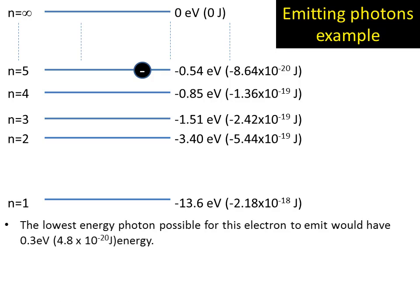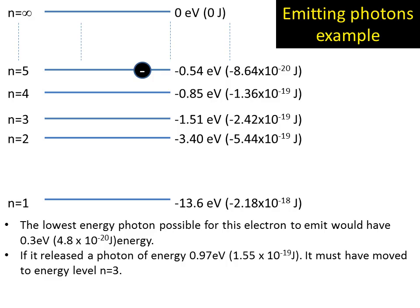So let's look at an example. The lowest energy possible for this one, the smallest amount of energy it can possibly lose would be to move from n equals 5 to n equals 4, which corresponds to a loss in energy of 0.3 electron volts. So that's the lowest energy photon this electron could ever emit. If we measured a photon and it came out as 0.97, we can actually work out that it must have moved to band 3. Because the difference between 0.54 electron volts at band 5 and 1.51 electron volts at band 3 is exactly 0.97. So it must have moved from n equals 5 to 3.